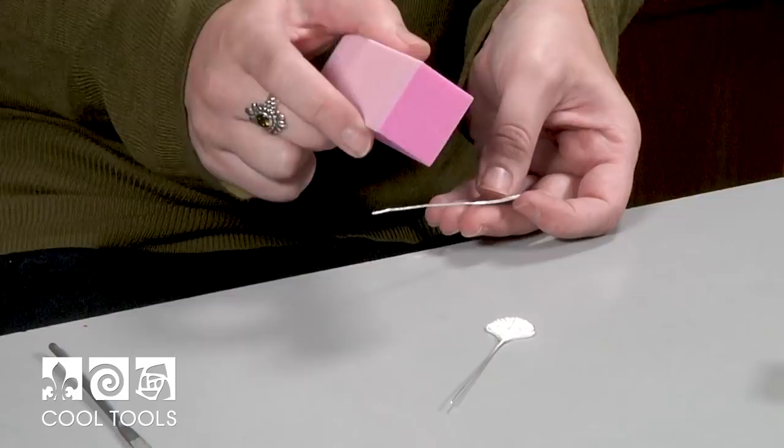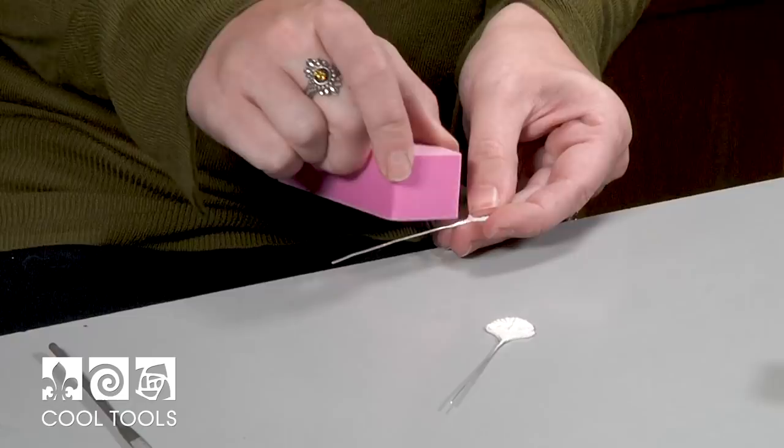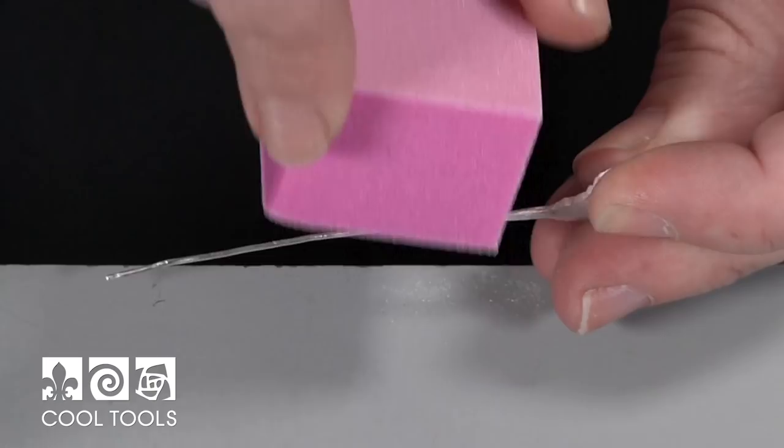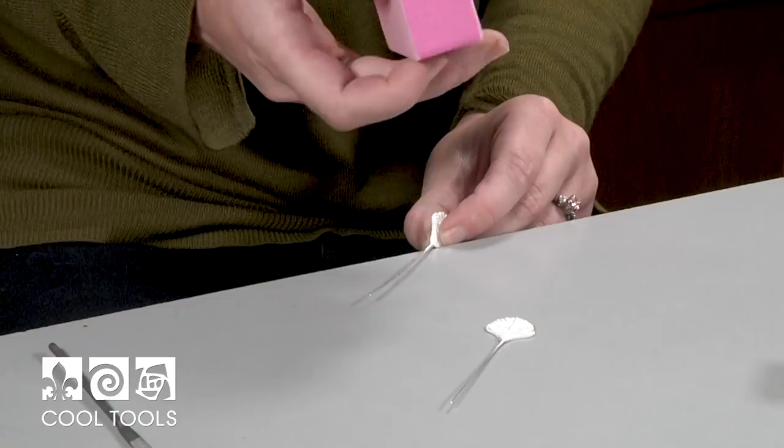And the pink block has two grits, a more coarse grit and a fine grit. So you want to make sure that you start with the coarser of the two. And this is just to remove the scratches made from the file. And then I'm going to flip to the more fine grit on this block.